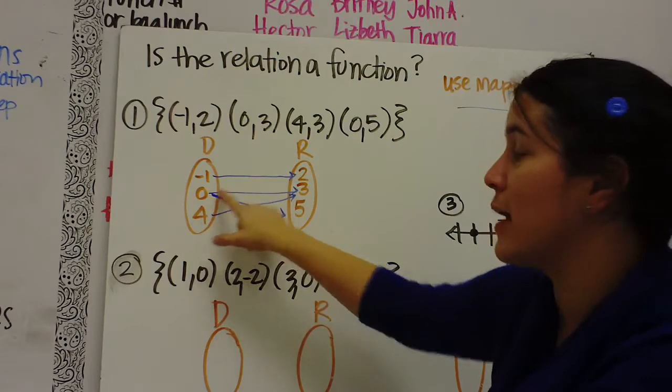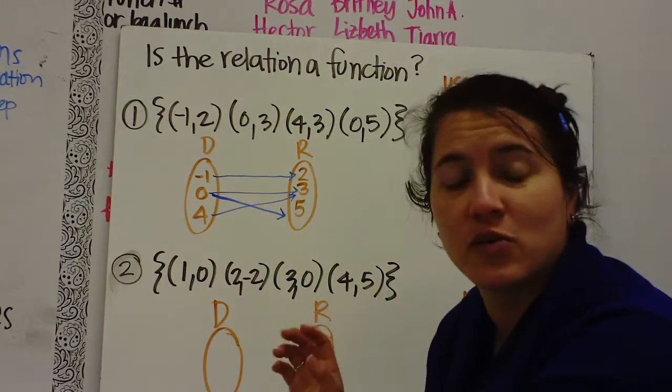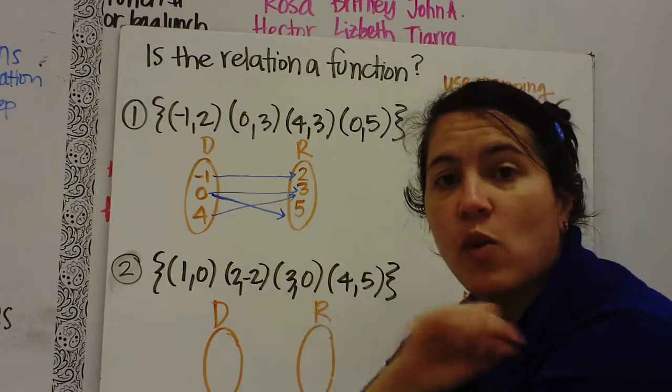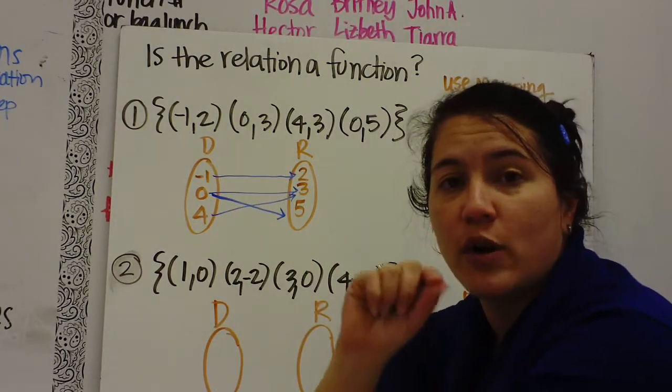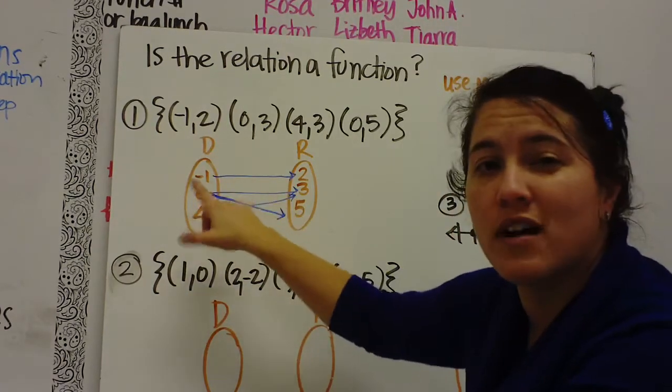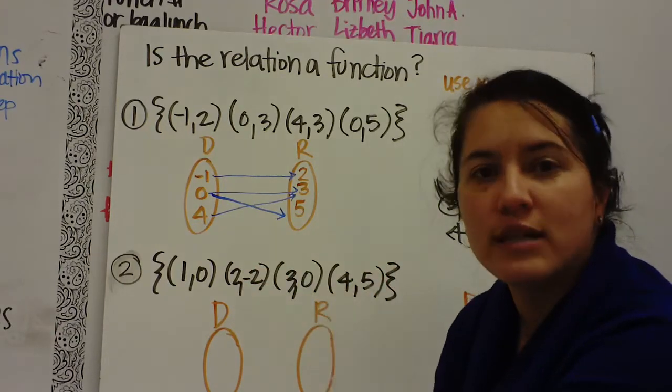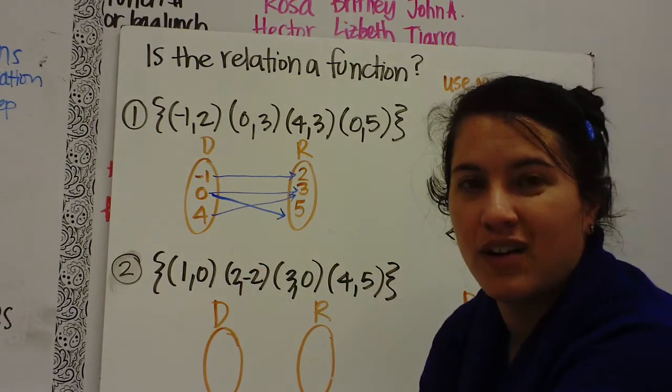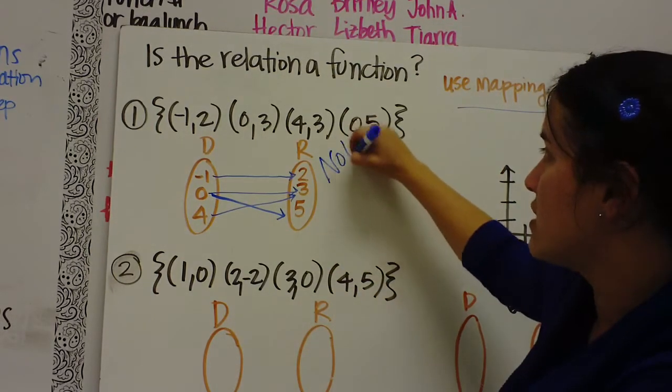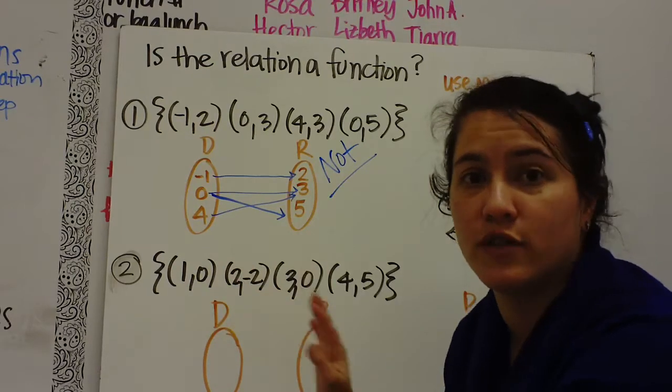So in this example, 0 is paired with 3, but 0 is also paired with 5. That breaks the rules. A function can only have one domain paired with one range. Meaning you can only have one of these numbers. You can't have one number going to two ranges. It has to be one to one. Because if I said, what is 0 paired with? Well, 0 is paired with 3 and 5. So the answer is no. This is not a function because you have 0 going to two different ranges.